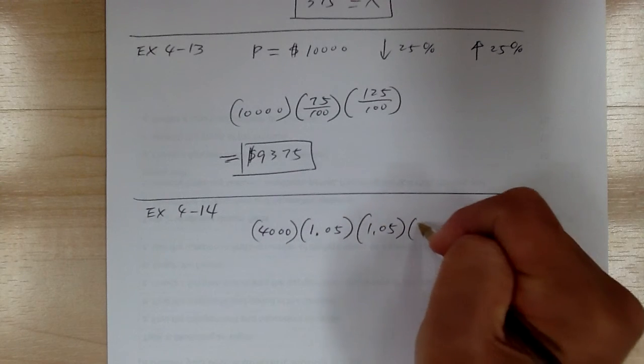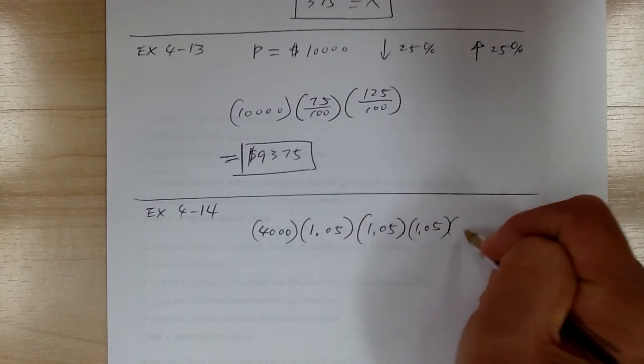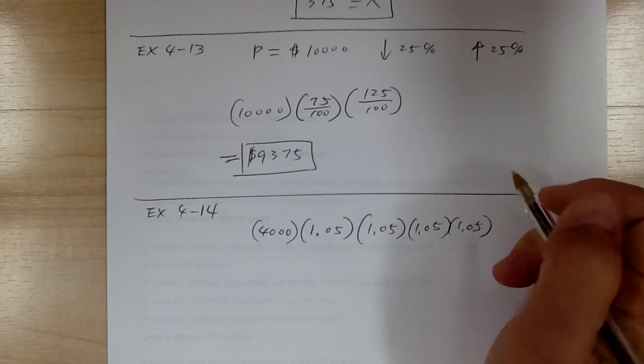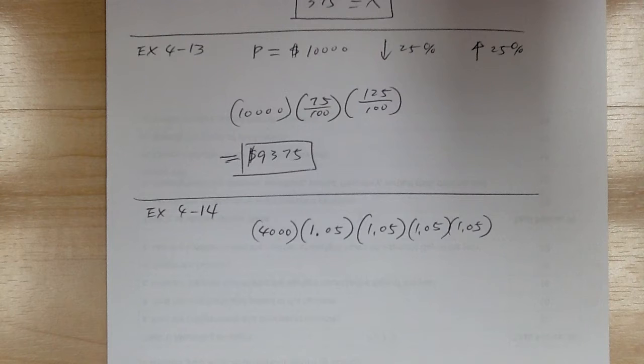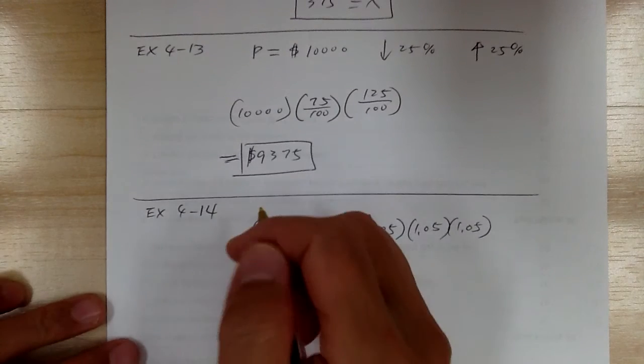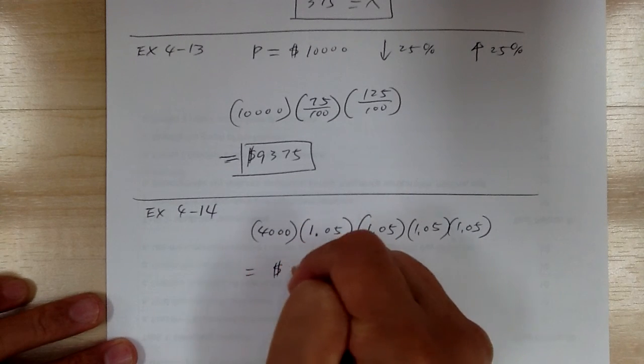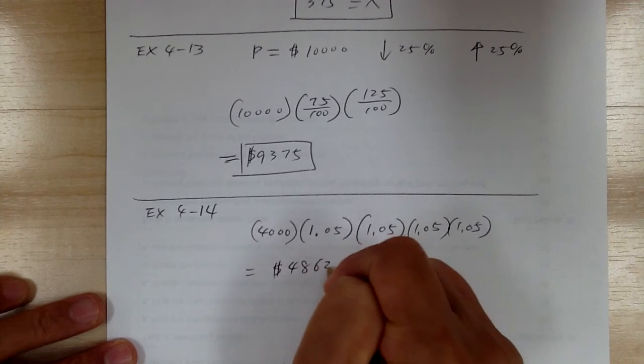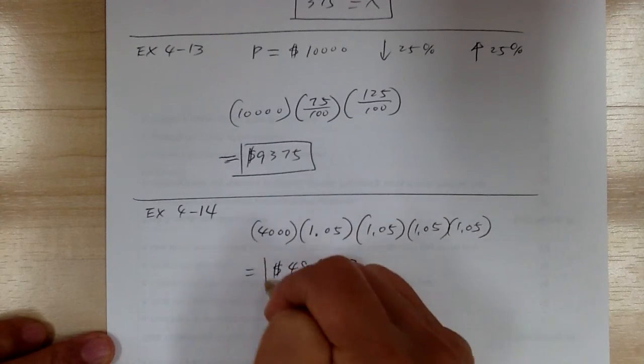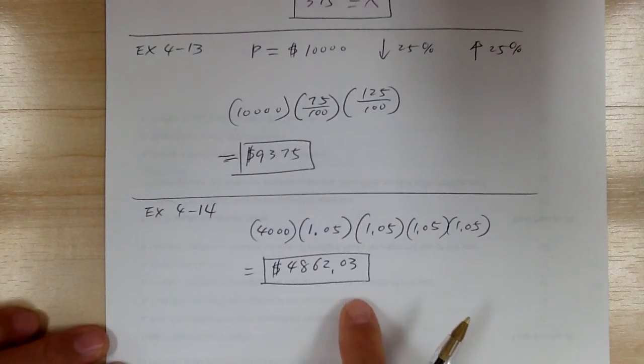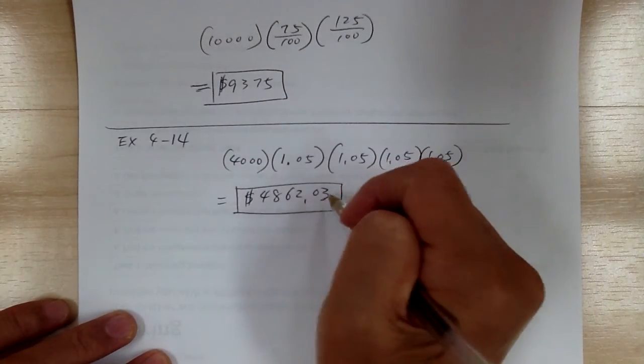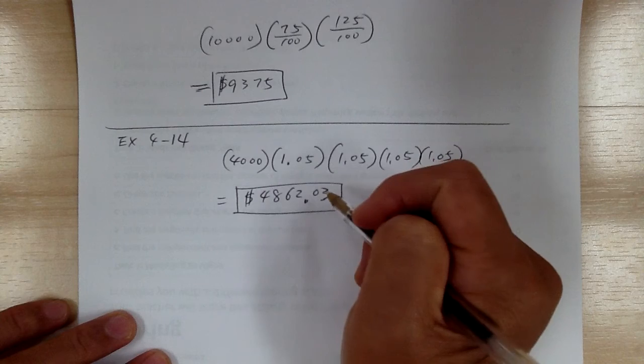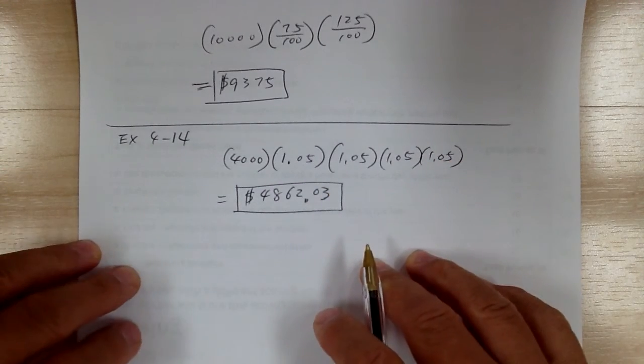So after 1 year, after 2 years, after 3 years, after 4 years. So go and get your calculator and you work it out, multiply out. And then this will equal to $4,862.03. Now when the answer is a money, you always want to round it off to the nearest cent.